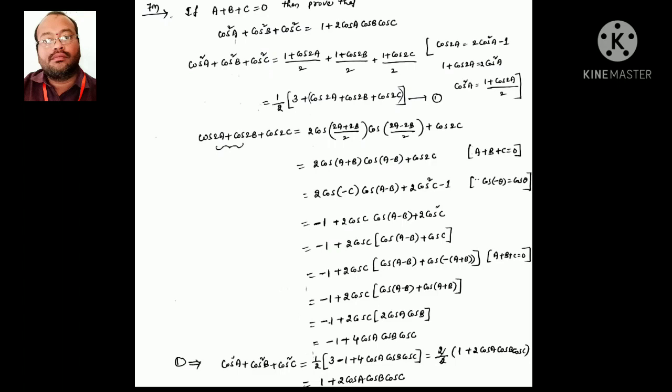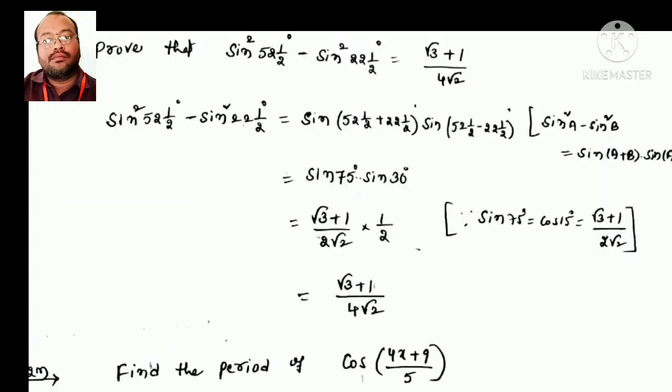Replacing this value into equation 1 and simplifying, we get the answer as 1 + 2cos a·cos b·cos c. This is very important for the annual exam.